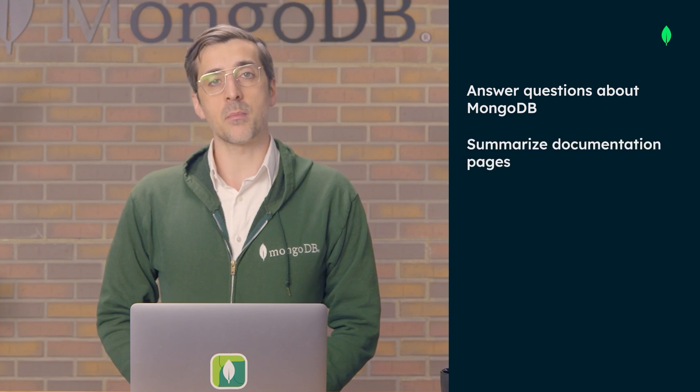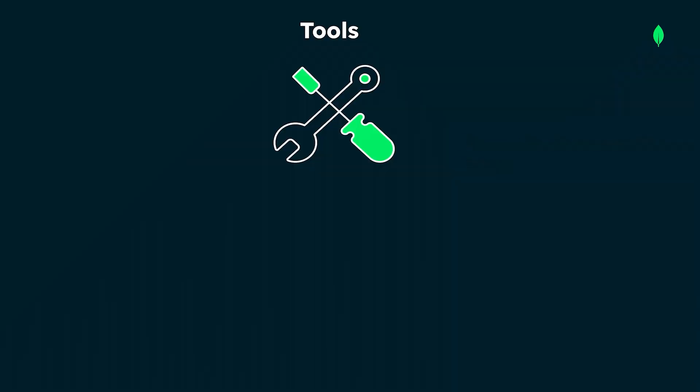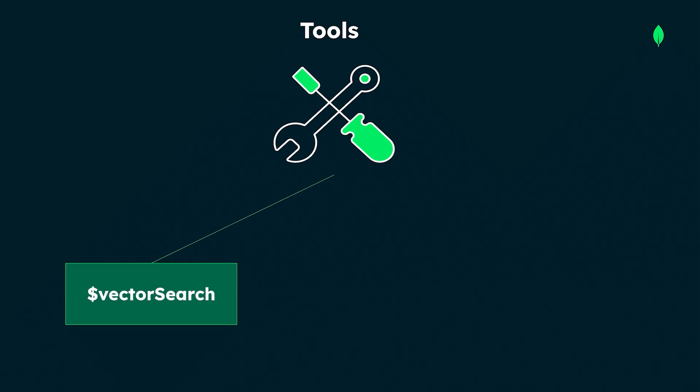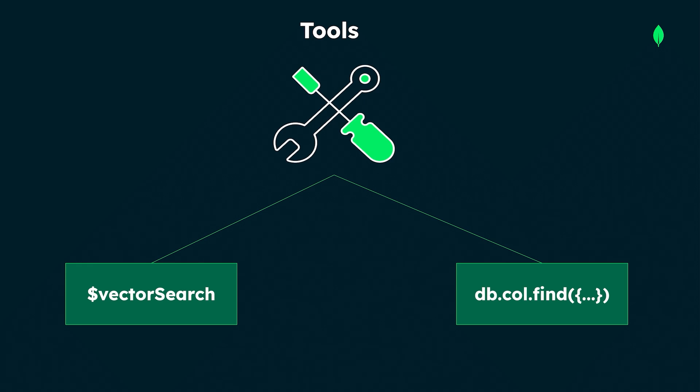Now that we know a little bit about agents, let's talk about a specific agent we'll be building. We're creating a straightforward agent that performs two tasks: answering questions about MongoDB and summarizing MongoDB documentation pages. To accomplish these tasks, our agent will use two tools. First is a vector search tool that finds relevant information in our MongoDB knowledge base to answer specific questions.